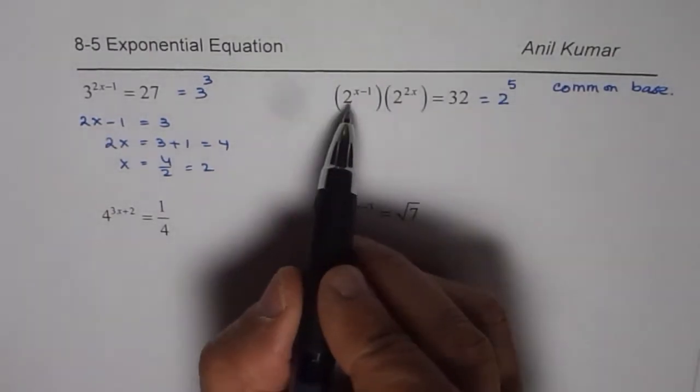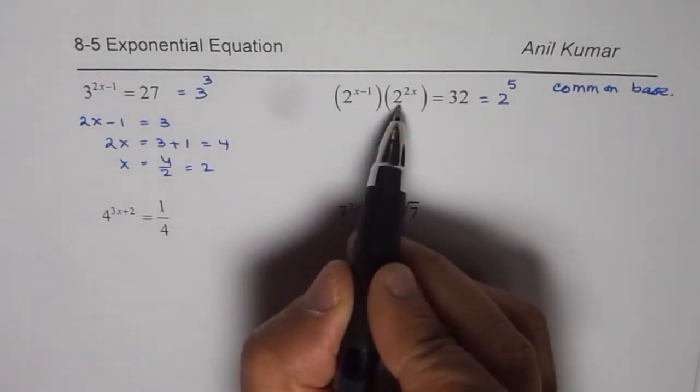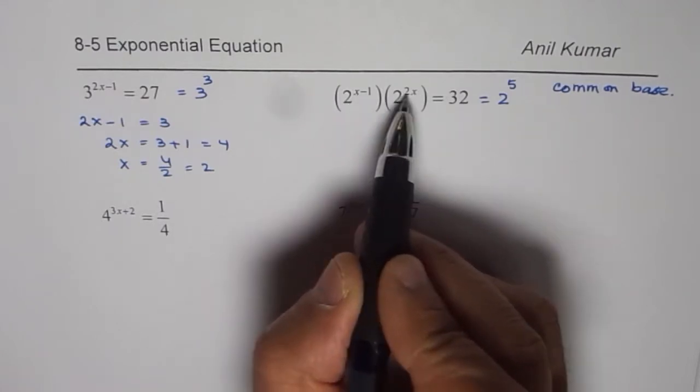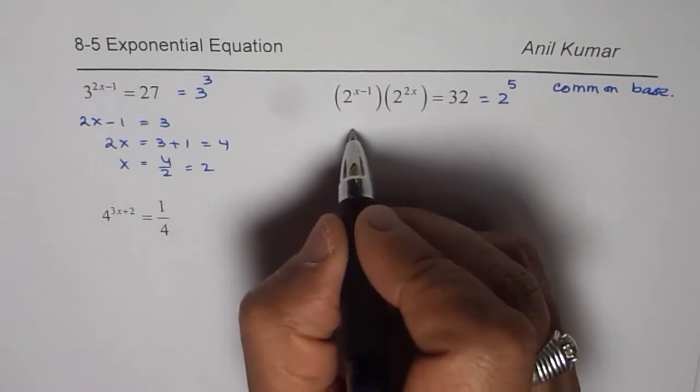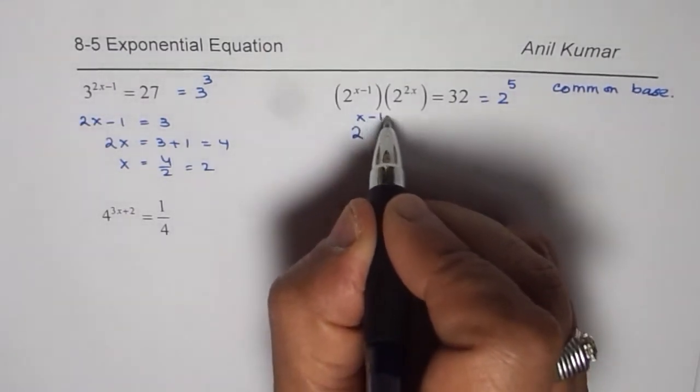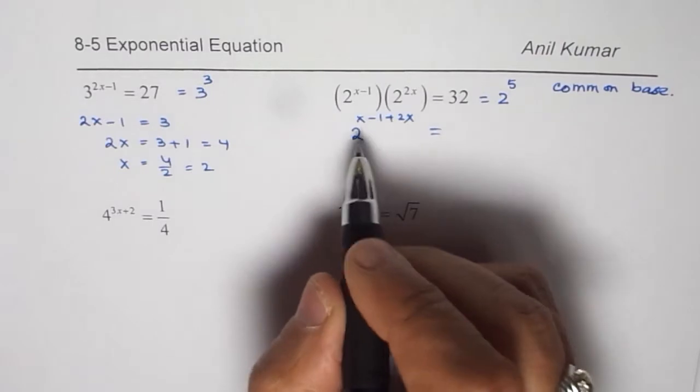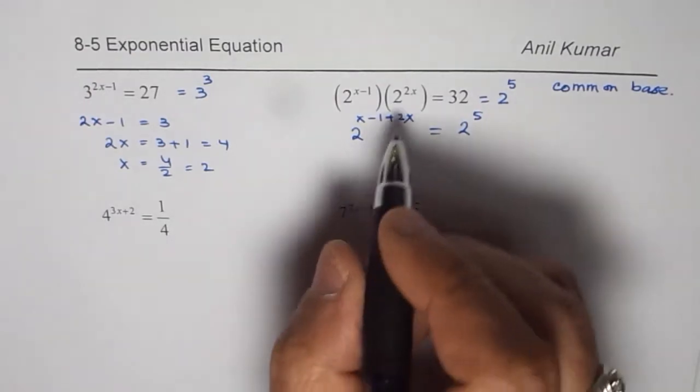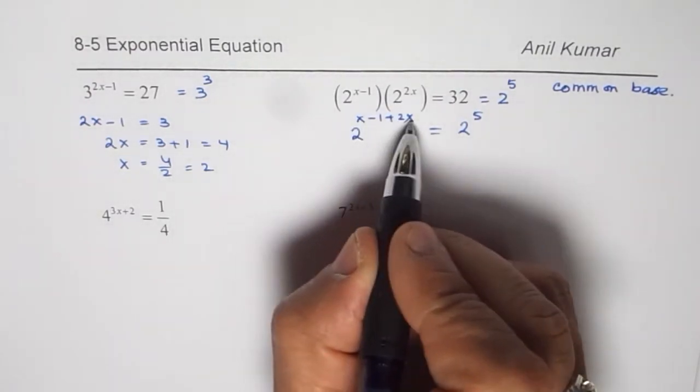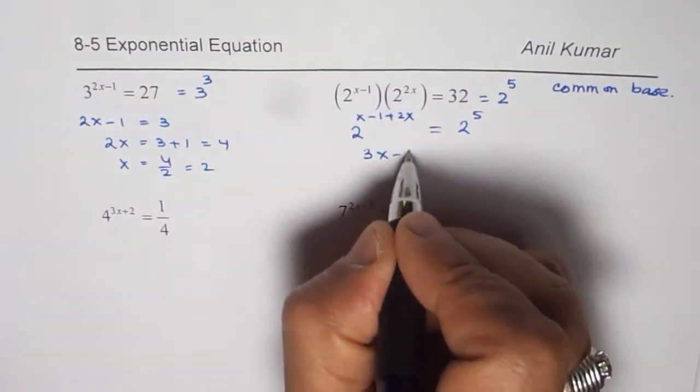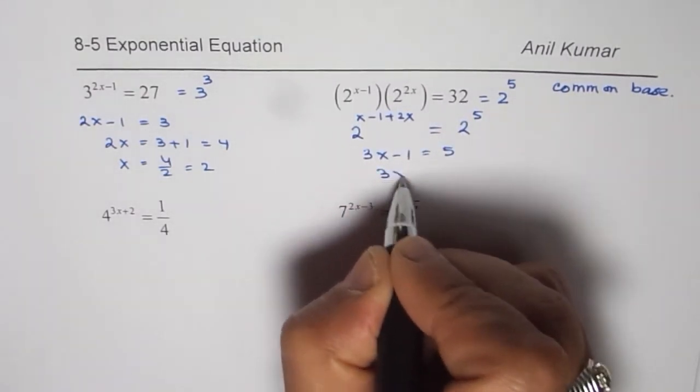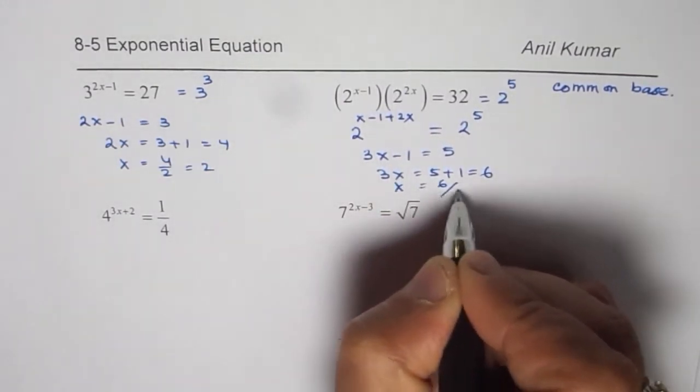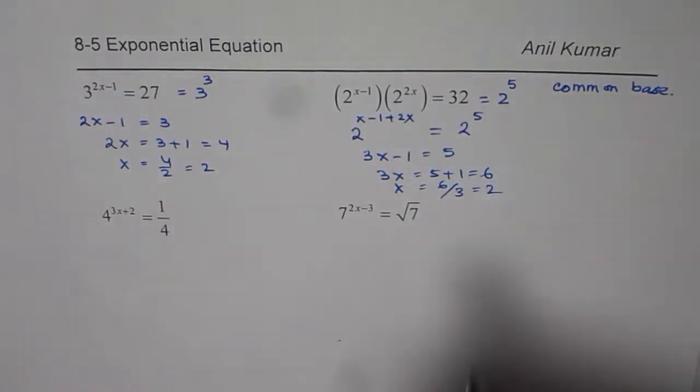Once you find that, we can know on the left side, we have to apply the rule which is when you multiply common base with exponents, the exponents get added up. So we have 2 to the power of x minus 1 plus 2x. x plus 2x is 3x. So we have 3x minus 1 equals to 5. 3x equals to 5 plus 1, which is 6. So x is equal to 6 divided by 3, which is 2. So again we get answer as 2.